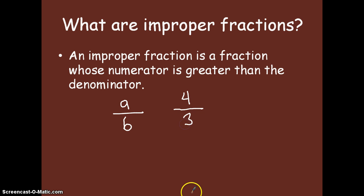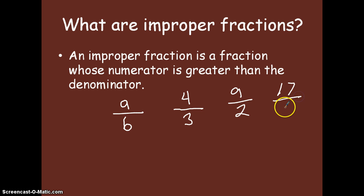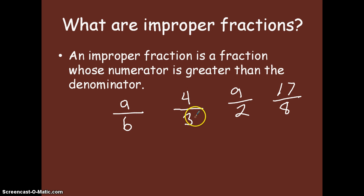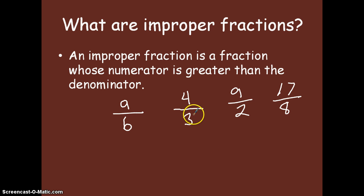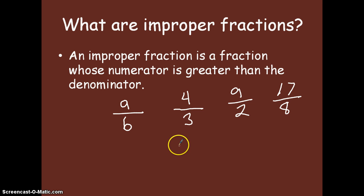For instance, 4 thirds is an example of an improper fraction. 9 halves could be an example of an improper fraction. 17 over 8 could be an example of an improper fraction. Anytime you have a numerator greater than your denominator, you have an improper fraction. All this really tells us is that we actually have enough parts — in this case, enough thirds — for at least one whole. Think of it almost like a division problem. Anytime you see a fraction bar, that designates an operation of division.